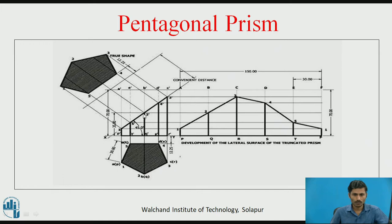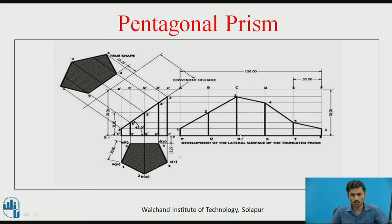Point 2 is marked on the Q–B vertical edge because, once the PA edge is unrolled in this direction, the Q–2 vertical edge comes first. Similarly, point 3 is on the next vertical edge, point 4 on the one after, and point 5 on the last. The intermediate vertical edges in the development are drawn at a distance of 30 mm each — five edges of 30 mm giving a total length of 150 mm. The development is named PQRST because the prism was cut at vertical edge PA.